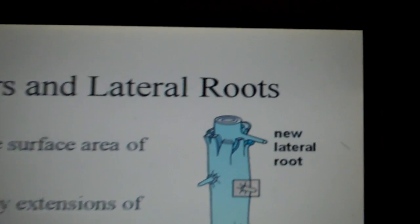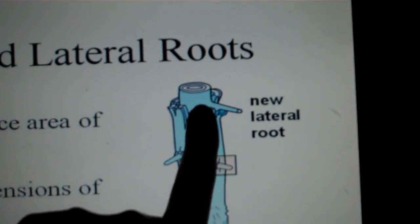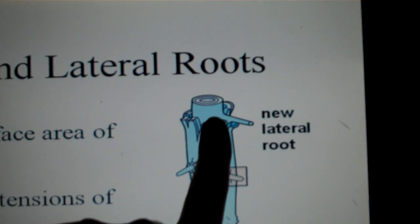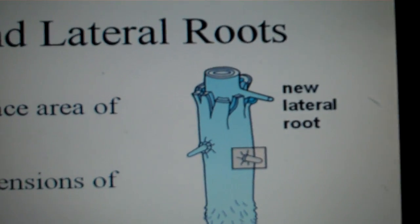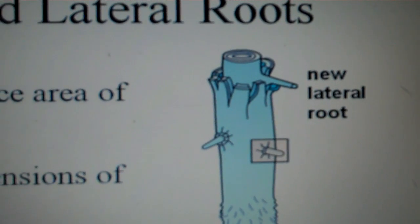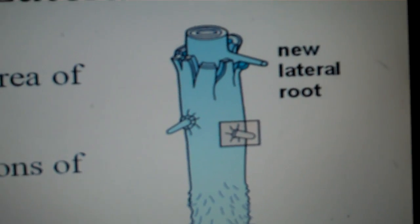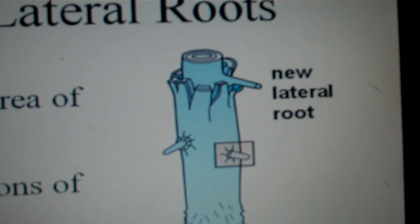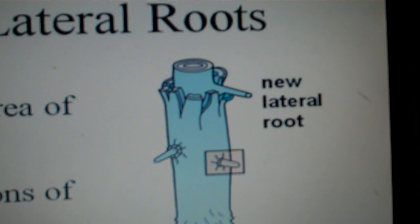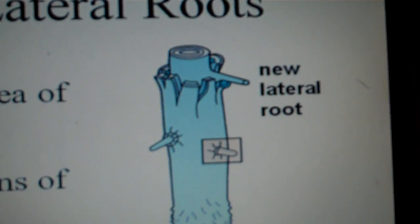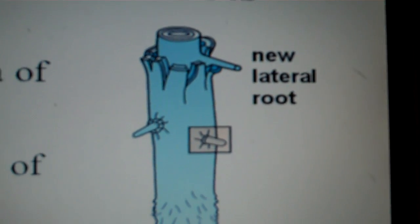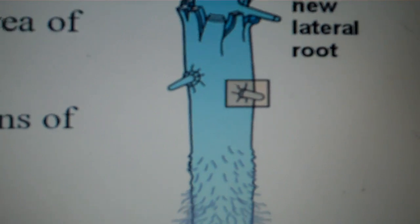Now lateral roots are going to form from the pericycle, which is just one cell thick, a layer, one cell thick. And that's where new lateral roots are going to form from. Now lateral roots are going to have to push through the cortex and the epidermis to reach the soil. But they are going to help the plant absorb water and minerals.